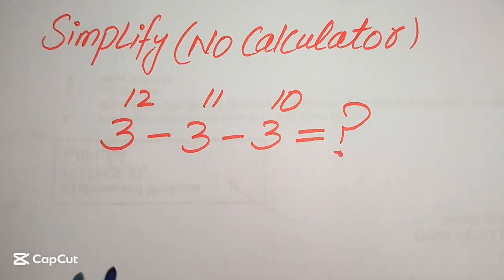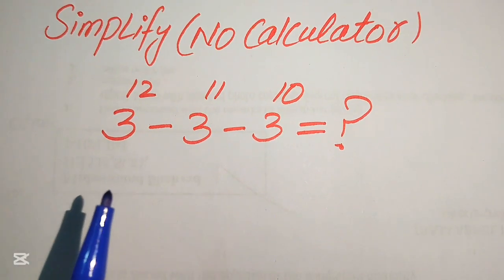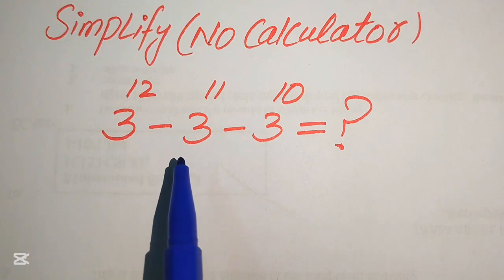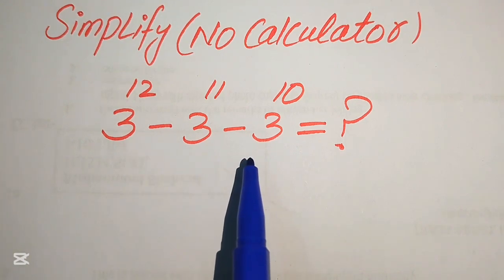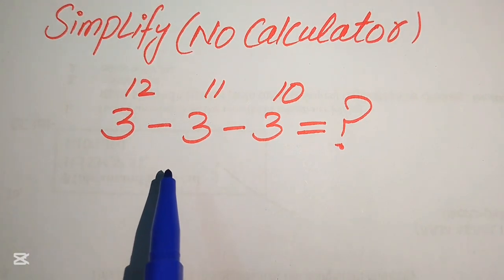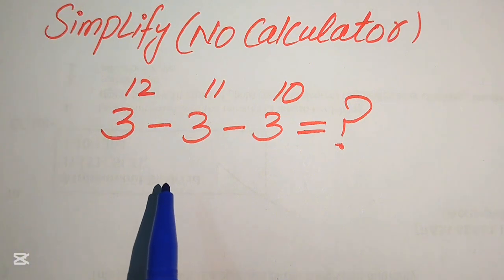Hello everyone. How to simplify this nice algebraic expression. We have 3 to the power of 12 minus 3 to the power of 11 minus 3 to the power of 10. We will simplify this algebraic expression into the lowest form.